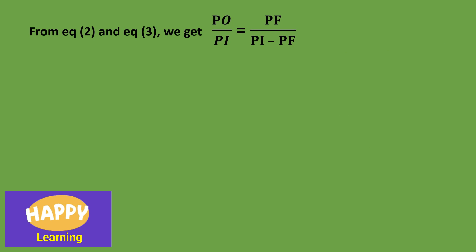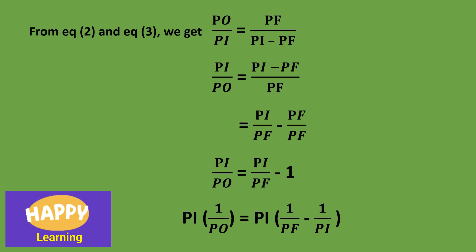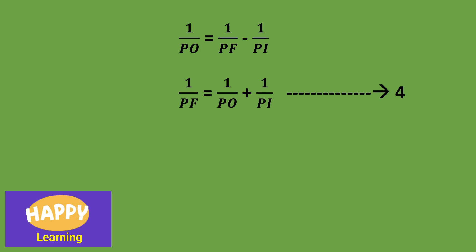From equation 2 and equation 3, we will observe that the LHS values are equal and hence we can equate the RHS values of equation 2 and 3. Then we get PO by PI equal to PF by PI minus PF. Let us write the reciprocals of these LHS and RHS. Then finally we get PI by PO is equal to PI by PF minus 1. Then take the term PI common. Both LHS and RHS sides, take the term PI common and you can cancel these terms. Then finally you get 1 by PO is equal to 1 by PF minus 1 by PI. So after rewriting, 1 by PF is equal to 1 by PO plus 1 by PI. Let it be equation number 4.